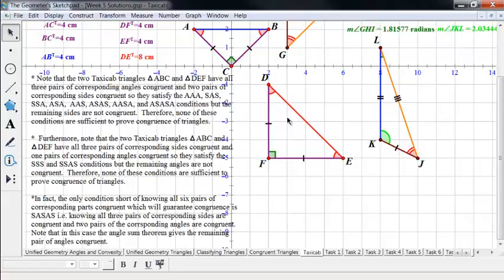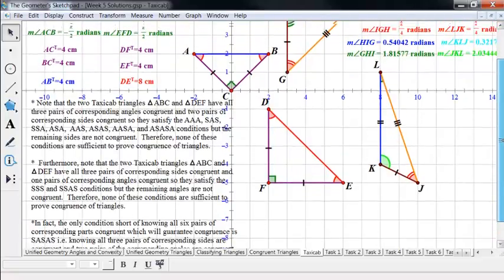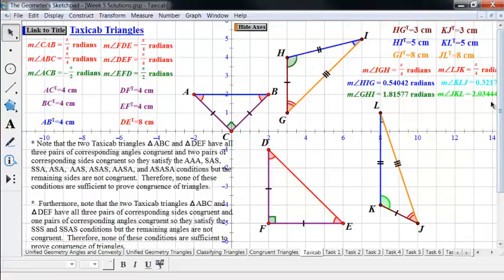So that's the only way we can show triangles are congruent in taxicab geometry without just showing all six pieces. And so in fact, there's basically nothing that you have for triangle congruence theorems in taxicab geometry.